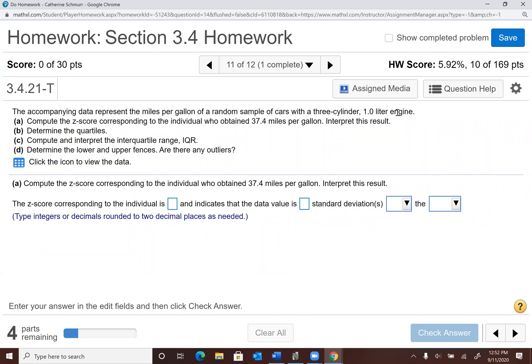In Part A, we're asked to compute the z-score corresponding to the individual who obtained 37.4 miles per gallon and interpret this result. So first of all, we are told that we have a sample and that is important because when we go to find the standard deviation, we want to use the sample standard deviation.